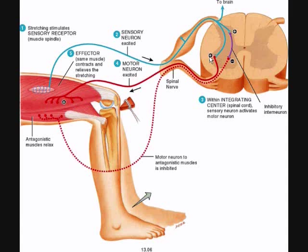If there's only one synapse for a reflex to complete its arc, that's called a monosynaptic reflex arc — one synapse. If it requires an interneuron, which is the neuron in between the motor and the sensory neuron, it's going to require two synapses. That is a polysynaptic reflex arc. It's important to see the difference between those two.